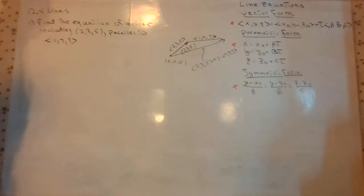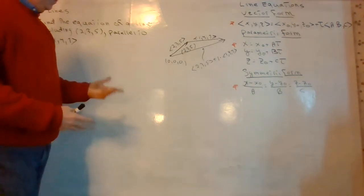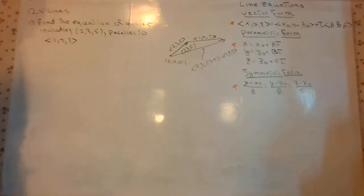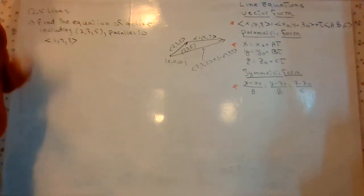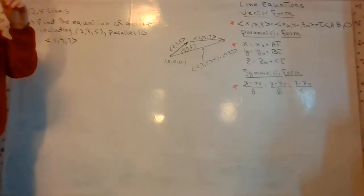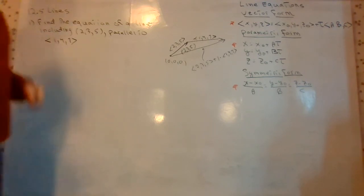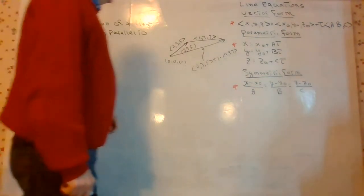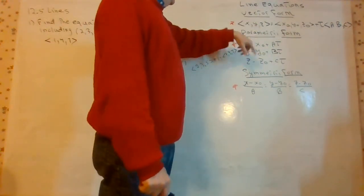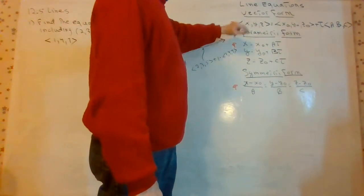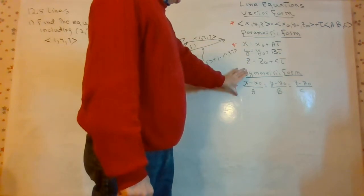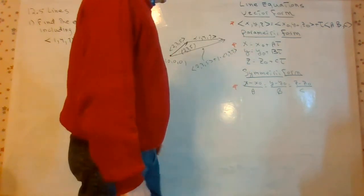This problem set, problem set number three, will have a general introduction to lines and planes going through some fairly basic problems. And then the next problem set will actually apply our knowledge of lines and planes — it will go a little bit deeper. So first of all, there are three forms of line equations: vector form, parametric form, and symmetric form. We're going to learn how to work with all three.